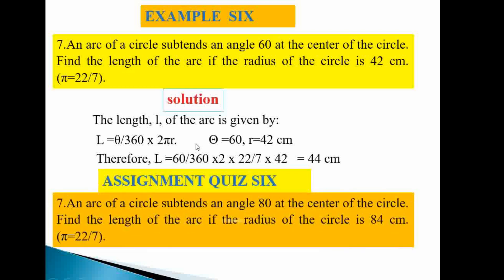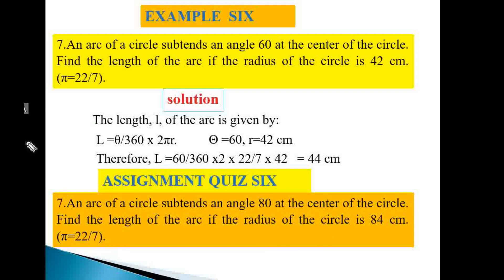Question seven assignment: An arc of a circle subtends an angle of 80° at the centre. Find the length of the arc if the radius is 84 cm. Take π = 22/7. Work it out the same way as the example.